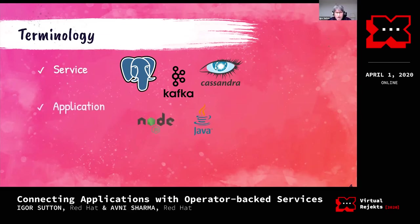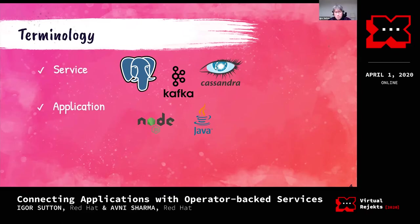We also have 'applications.' Since everything is a system, applications are systems as well, but they are usually more characterized for solving a specific need. For example, we're talking about applications as web applications or Java applications that consume from Kafka services or Kafka streams.